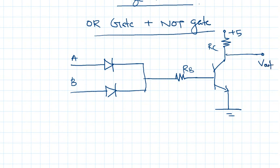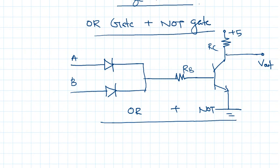This is a NOR gate plus this is a NOR gate. This is the way to realize a NOR gate using a diode and transistor.